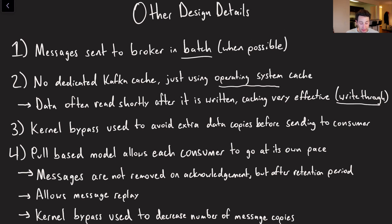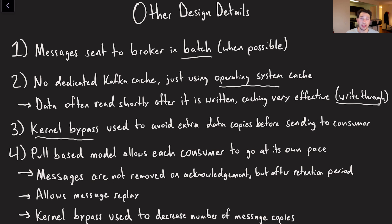Another thing that Kafka does is use something called kernel bypass. Basically, when we're sending messages over the network to a particular consumer, note that this requires multiple different copies of the message — from the application to the kernel layer, and then the kernel layer to some sort of socket. If you can avoid copying it to the kernel layer, you're going to speed yourself up a little bit, and this is just a nice optimization that Kafka goes ahead and do.